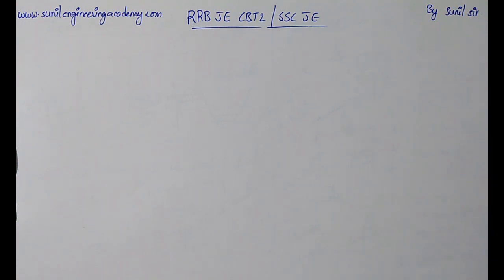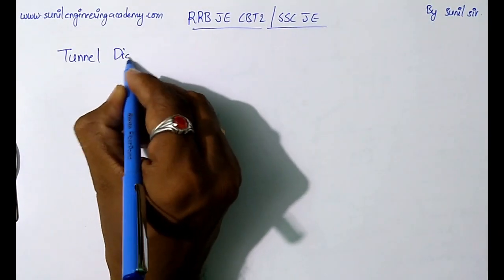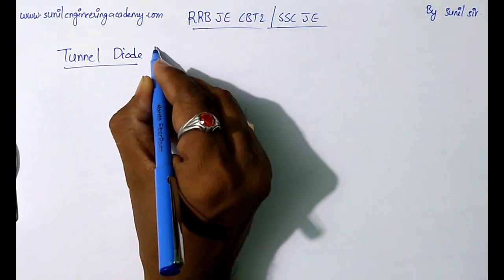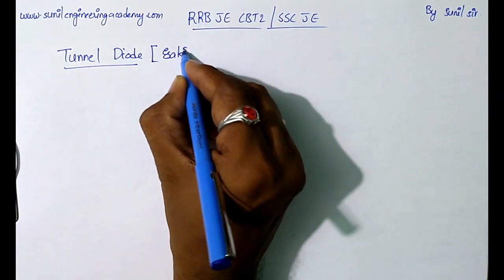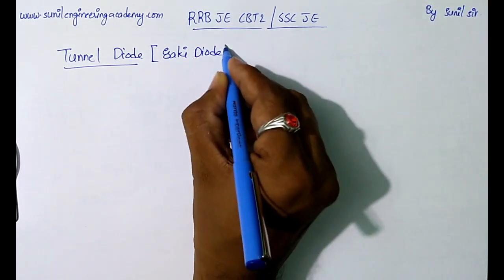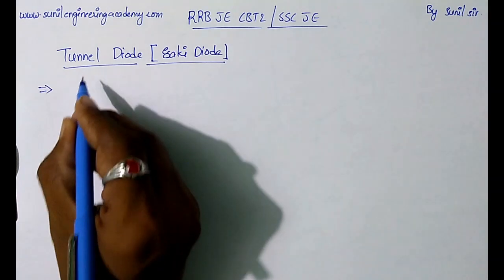Welcome to Sunil Engineering Academy. In the last class we discussed the Zener diode under special diodes. In this class I am going to discuss another special diode, that is the tunnel diode. The tunnel diode is also called the Isaki diode.